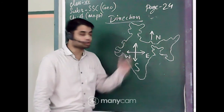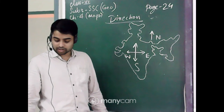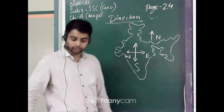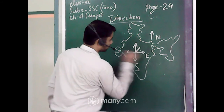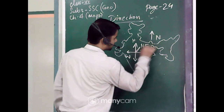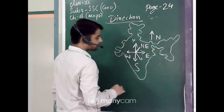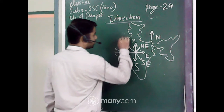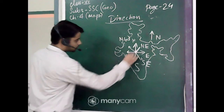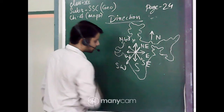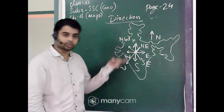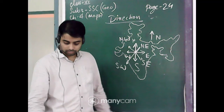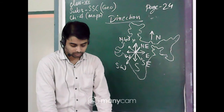These directions are also called cardinal points — remember carefully. Besides the four main directions, there are four intermediate directions. Between north and east it is north-east; between east and south it is south-east; between north and west it is north-west; and between west and south it is south-west. These four are called intermediate directions, and north, south, east, west are the cardinal points.